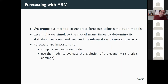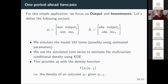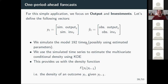Why are forecasts important? In this way we can compare and evaluate models, and we can ask the model whether a crisis is coming. We focus on output and investment. We simulate with the estimated parameters many times to get time series of simulated output and simulated investment, and we have the observed output and investment. We simulate the model 192 times — because we have 24 cores, so it's divisible by 24 — the point is just having many simulations.